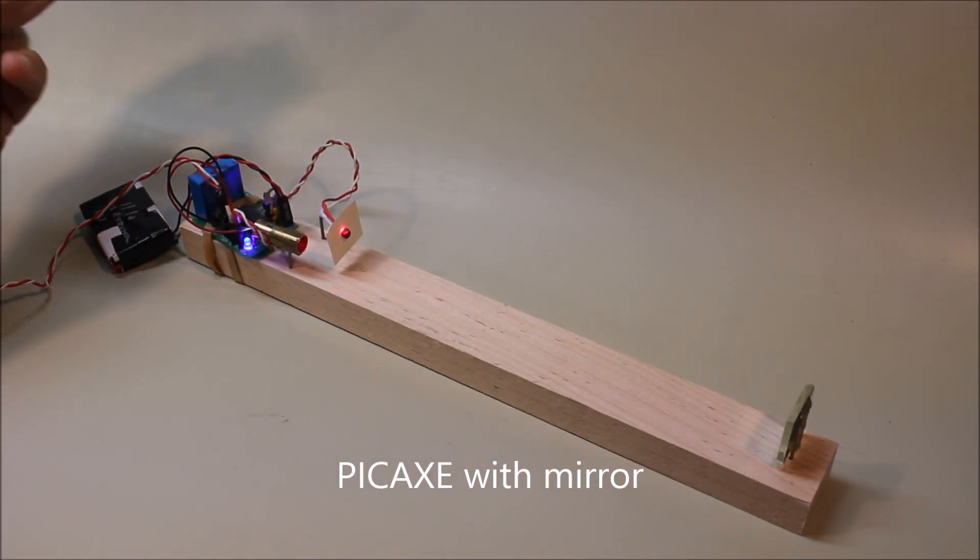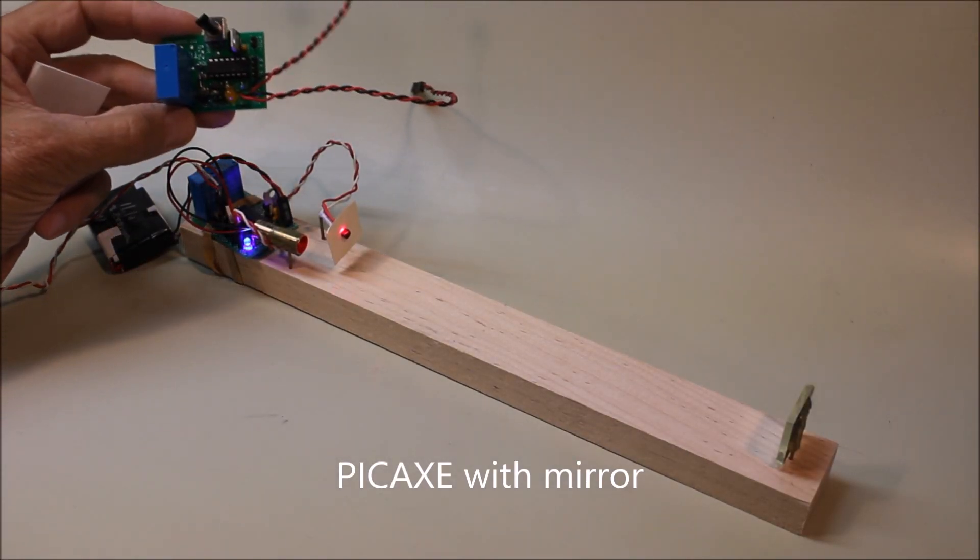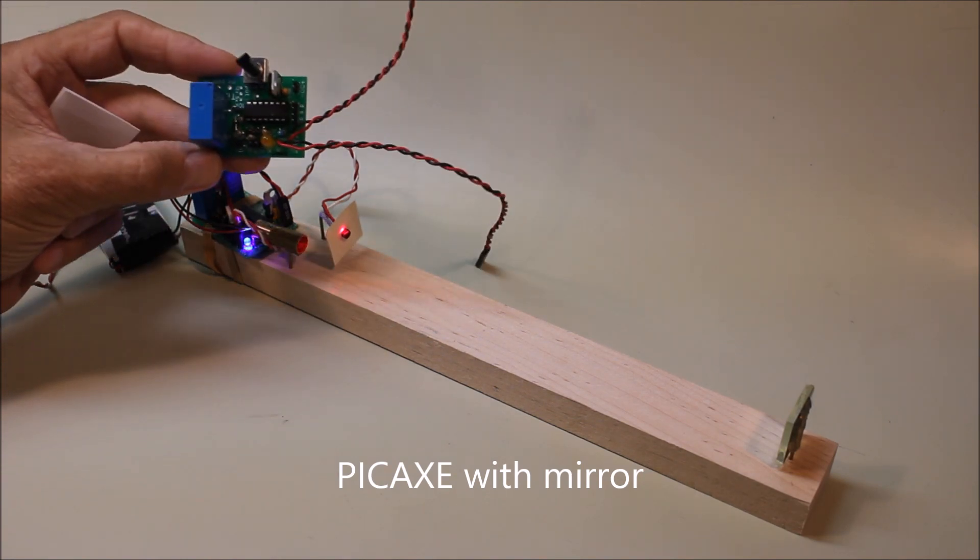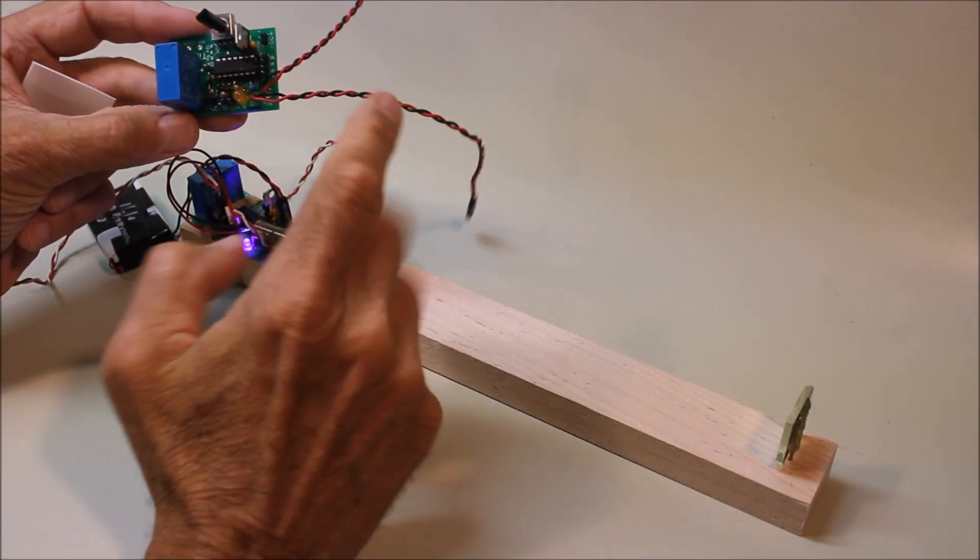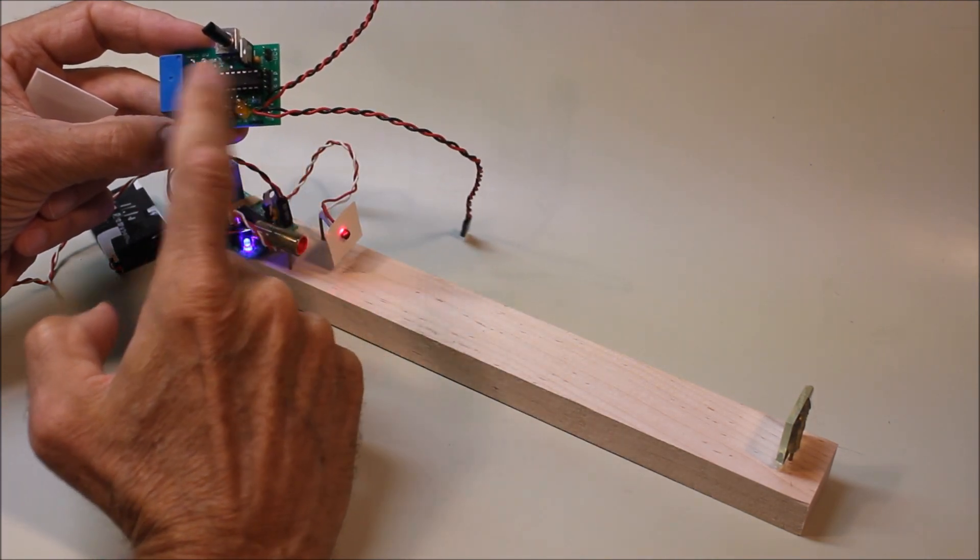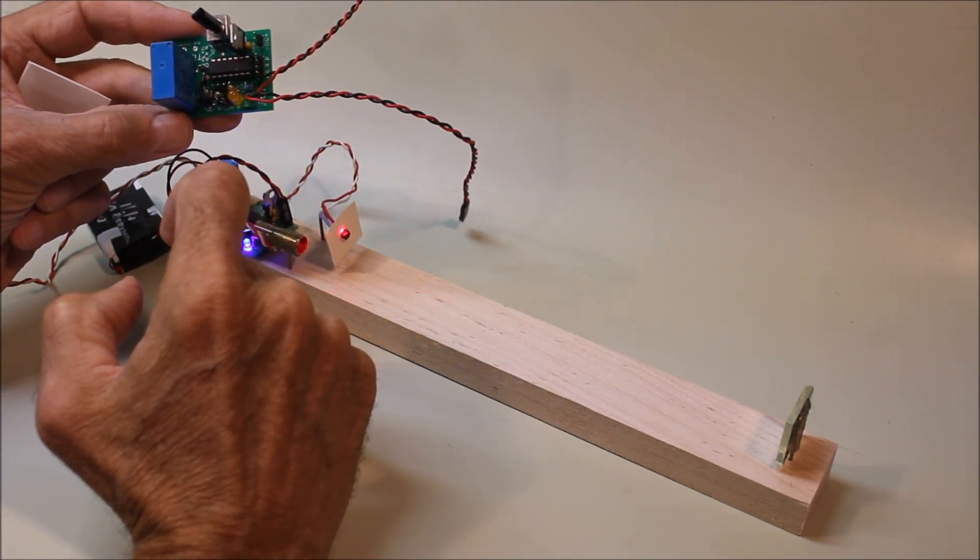This time the transistor circuit has been replaced with a circuit that uses a pickaxe microcontroller that you can see here. Here's the pickaxe, there are connections for the phototransistor and the laser, a relay, a voltage regulator and a few other components.